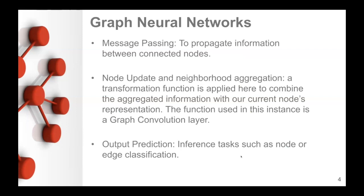So graph neural networks, we're trying to propagate information between connected nodes. And then we use a transformation function here to combine the aggregated information with our current node's representation. And the function used that we use going forward is what we call a graph convolution layer. And for our output prediction, inference tasks, such as node or edge classification.